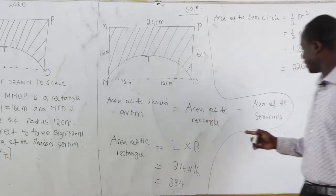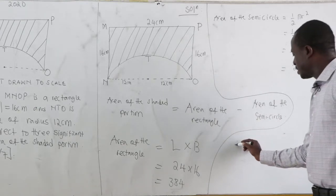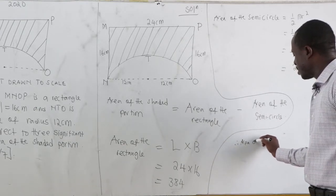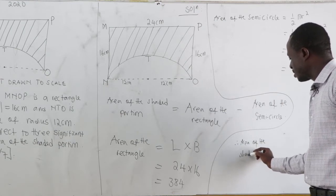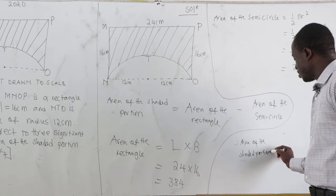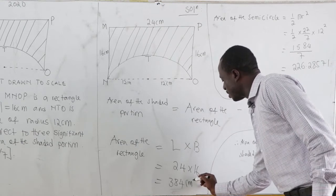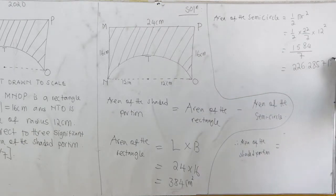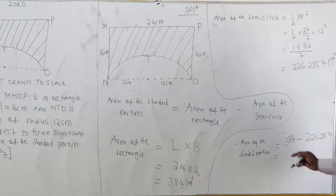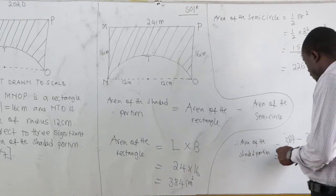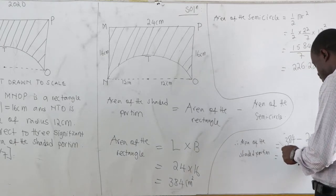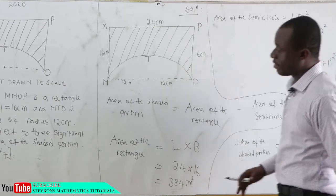So we now know area of the rectangle and area of the semicircle. Hence, area of the shaded portion is area of the rectangle, which is 384 cm squared, minus 226.28571. This would give us 157.7142857. But then the question says correct to 3 significant figures.